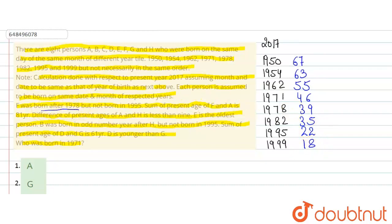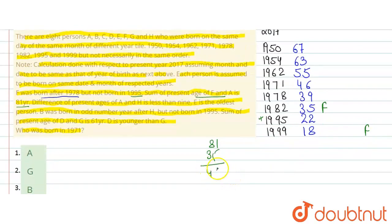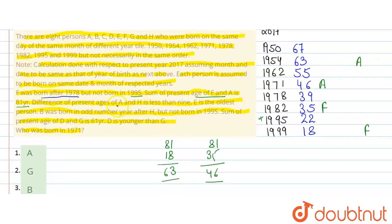F was born after 1978 but not in 1995, so F is either born in 1982 (age 35) or 1999 (age 18). Given that the sum of present ages of F and A is 81: if F is 35, then A = 81 − 35 = 46. In the second case, if F is 18, then A = 81 − 18 = 63.